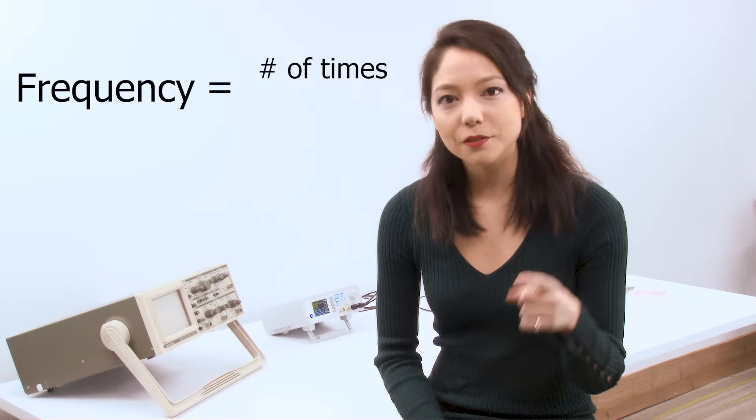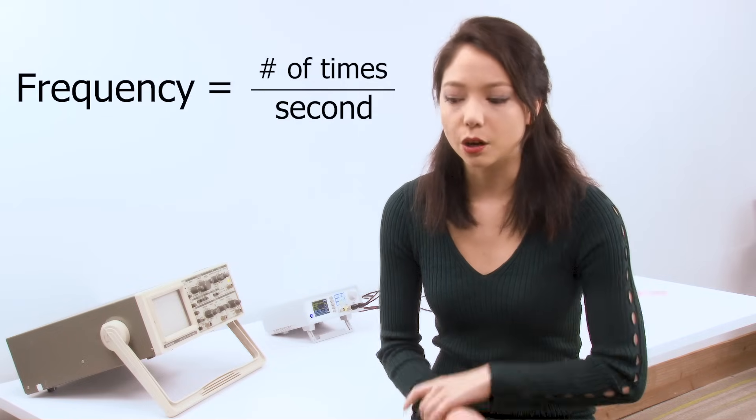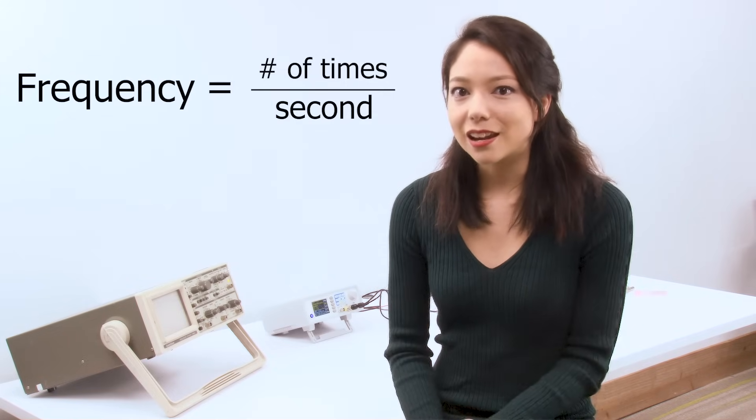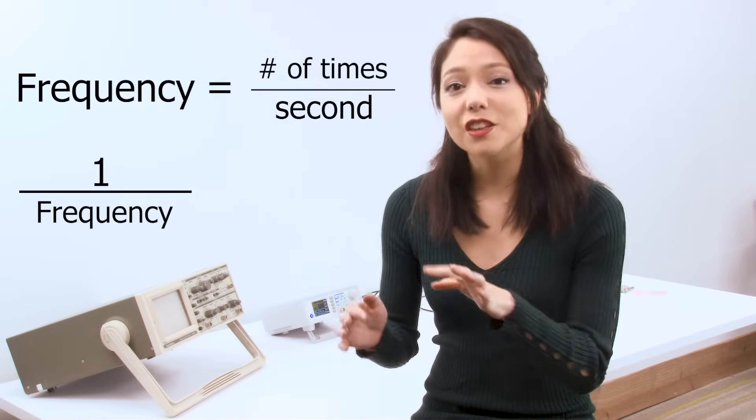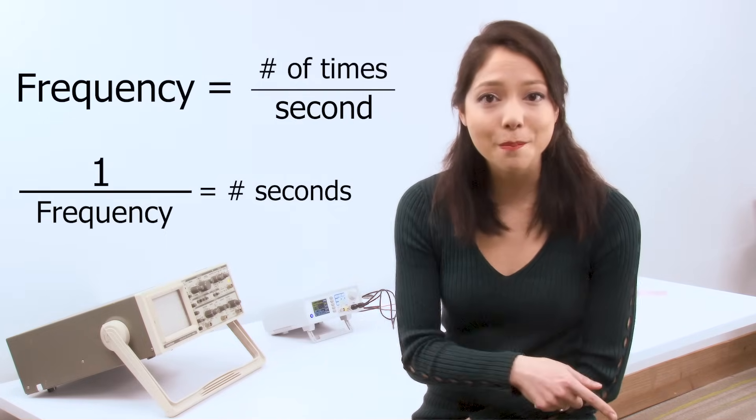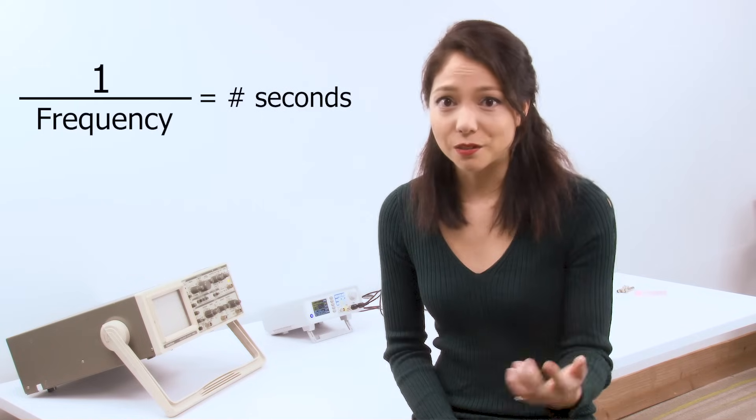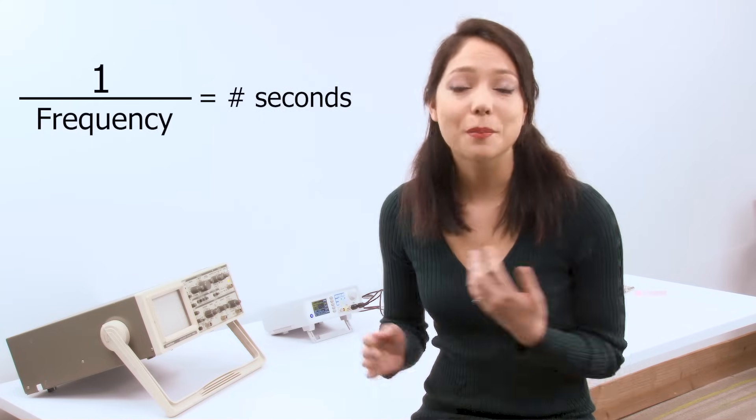Now that we have the basic concept under our belts, let's make this a little bit more interesting. If frequency is the number of times an event happens per second, or one per second, that means that frequency is the inverse of the number of seconds it takes for something to happen. Therefore, if we take one and divide it by our frequency, we get a measurement called the period.